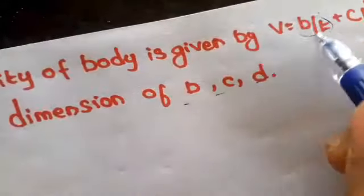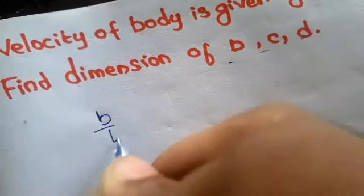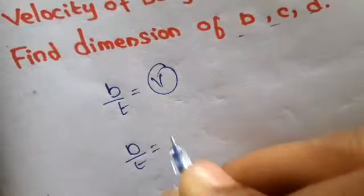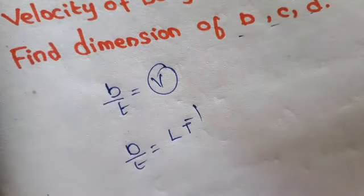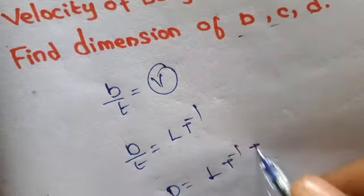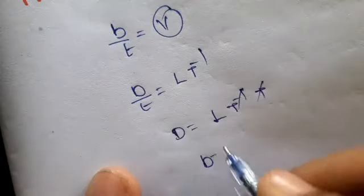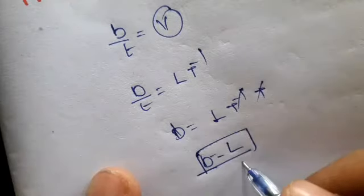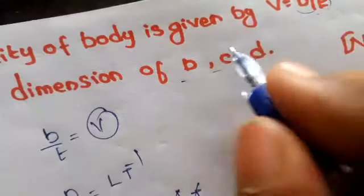We put this separately. V by T equals V. What is V? Velocity. V by T equals LT to the power minus 1. V equals LT to the power minus 1. This is time T. T gets cancelled. So dimension of V will be L. Dimension of V is L.